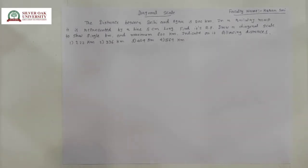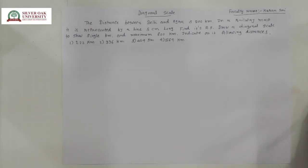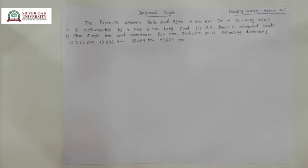In this video, we are going to continue with the diagonal scale. In one of the examples, the distance between Delhi and Agra is 200 km, and on a railway map that is represented by a line that is 5 cm long. We have to find its representative factor and also draw the diagonal scale to show a maximum of 600 km, and indicate the distances 222 km, 336 km, 459 km, and 569 km.